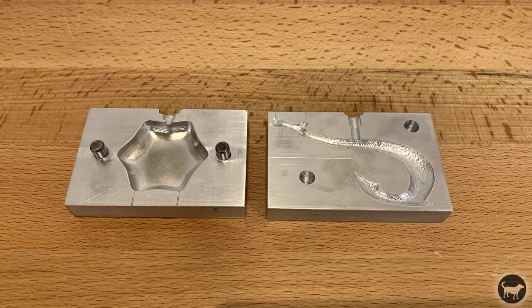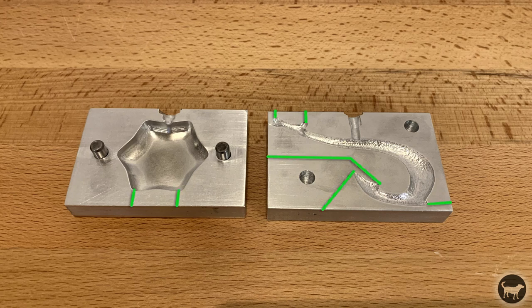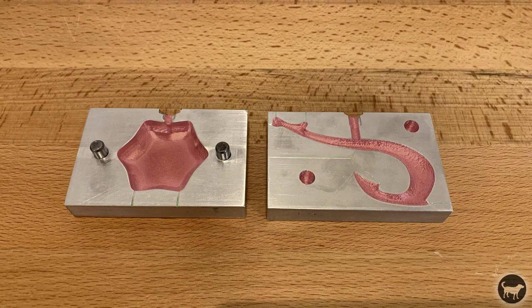You will also notice that vents are cut into one side of the mold. These are there to make sure air can escape the mold but are too small for the plastic to come out. I would also recommend only cutting the part and the main sprue during the CNC process.